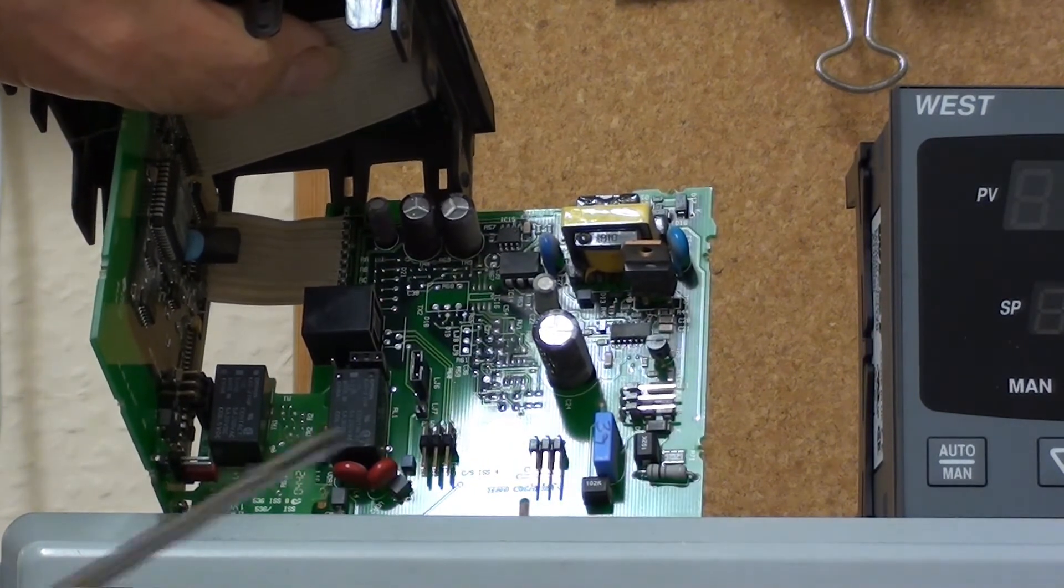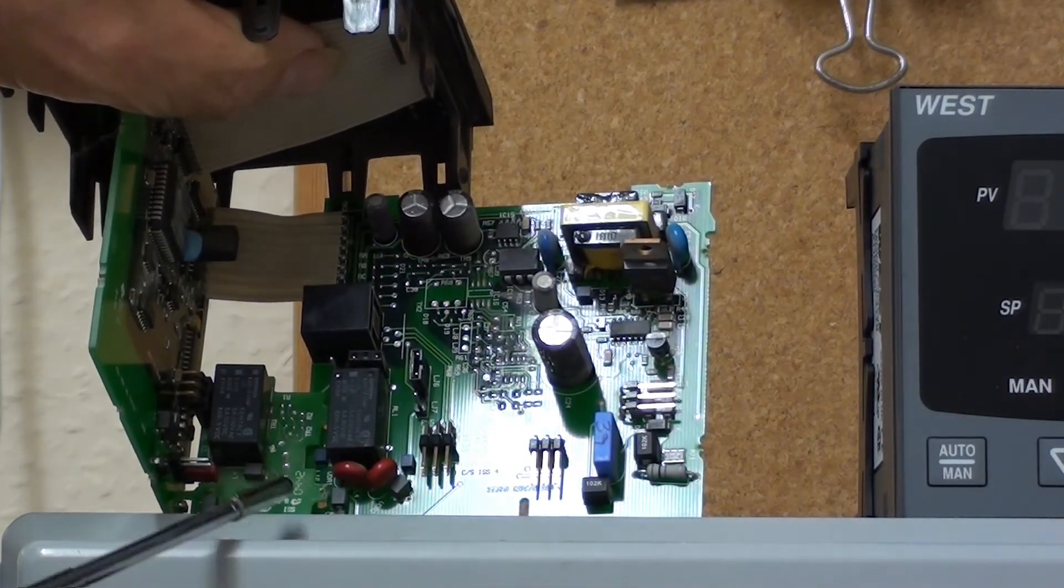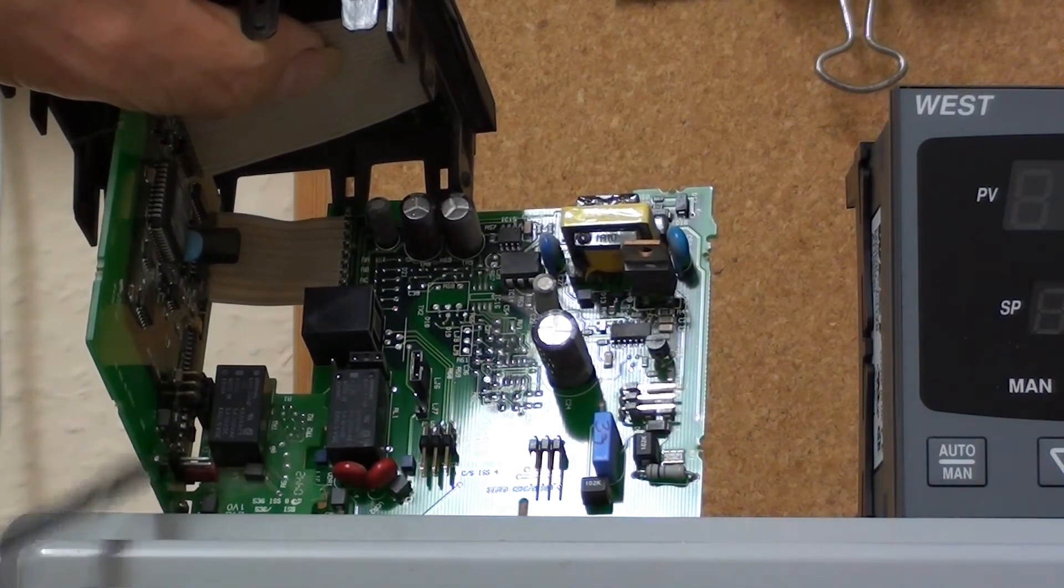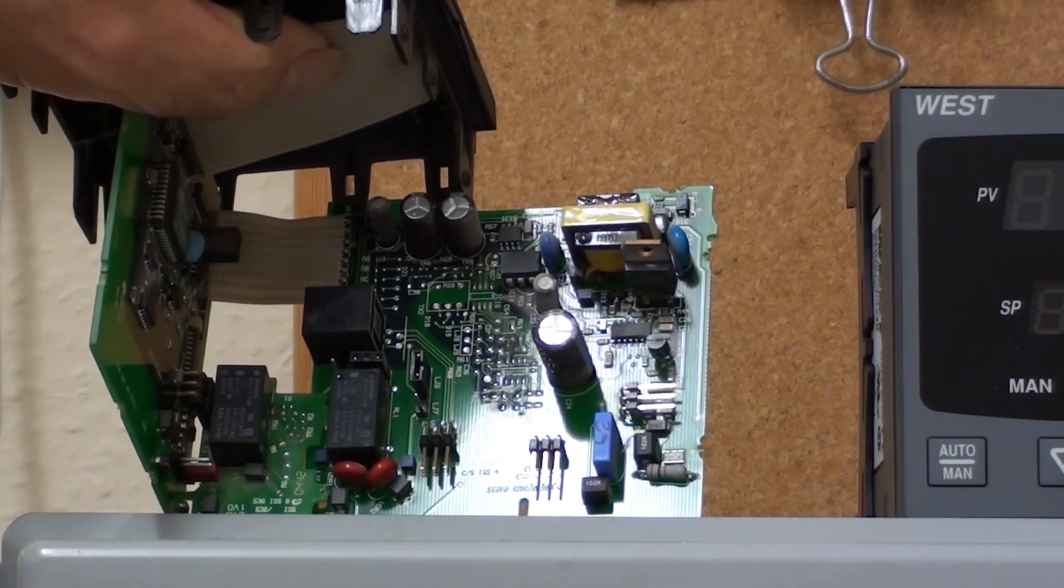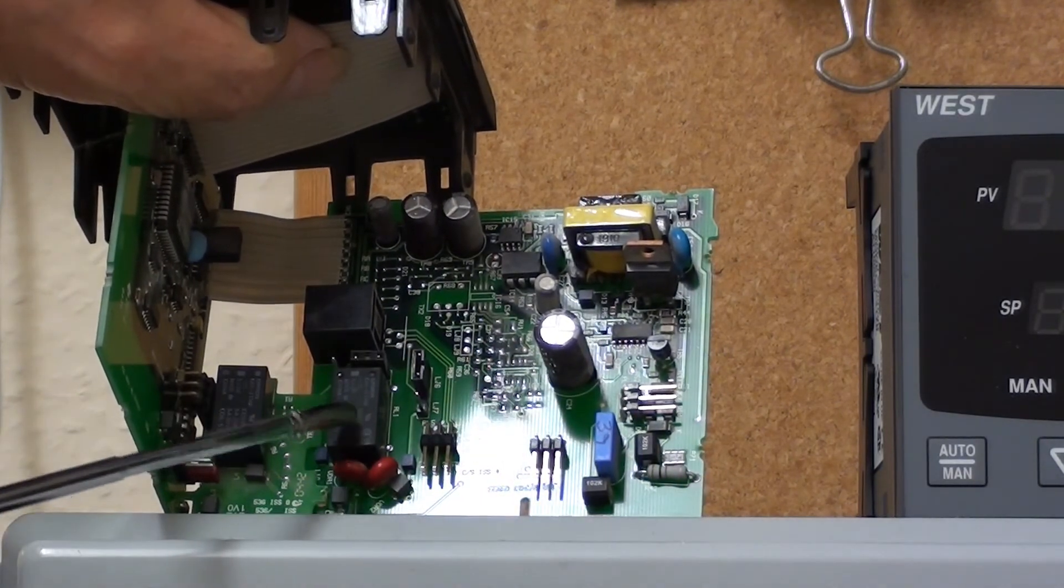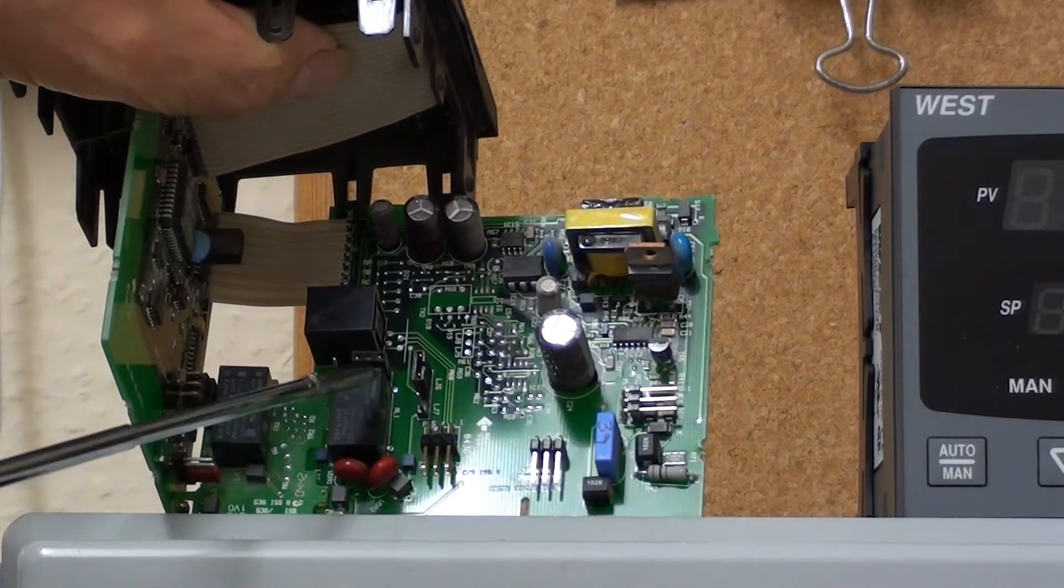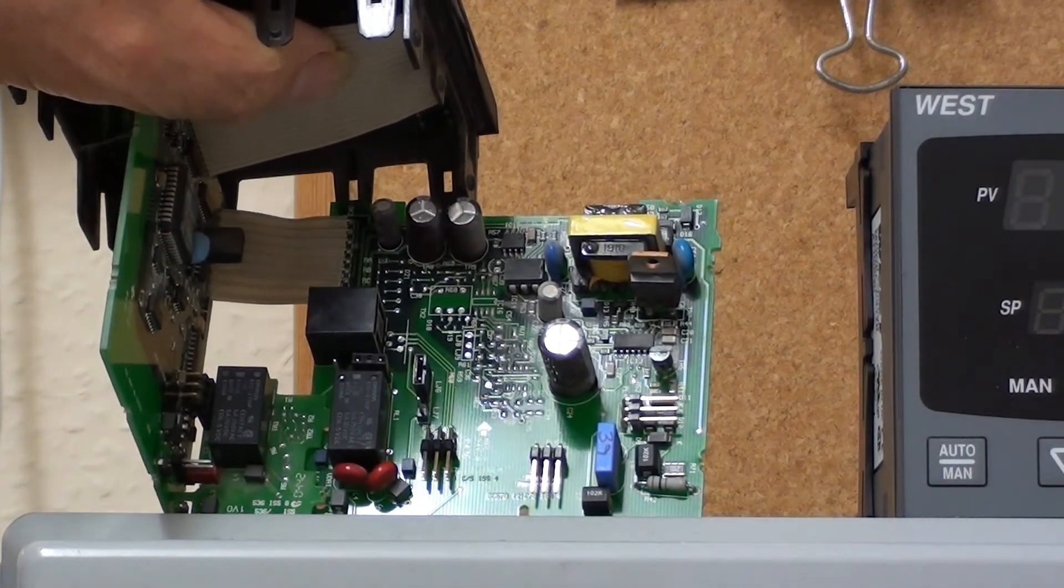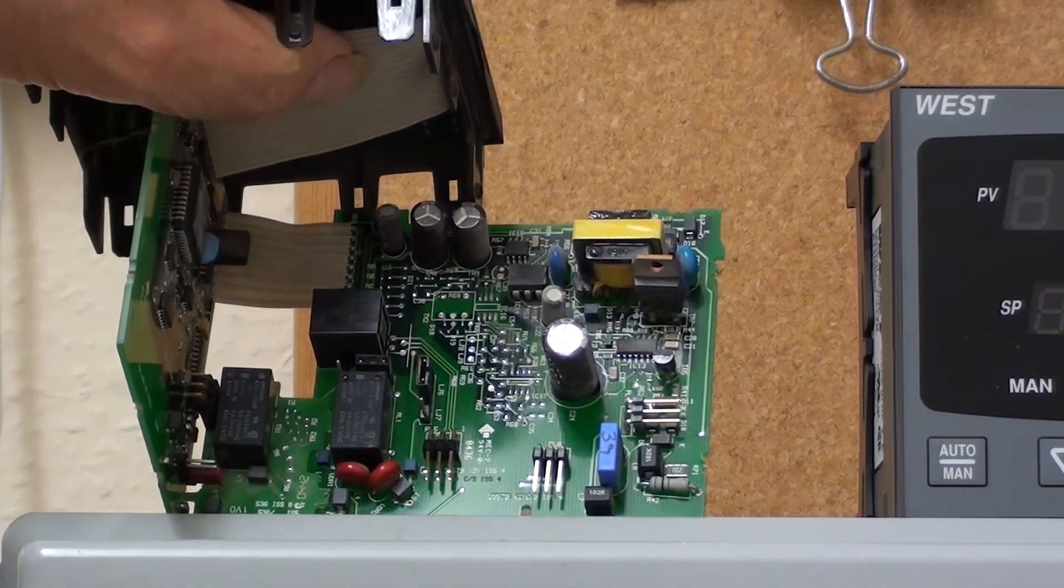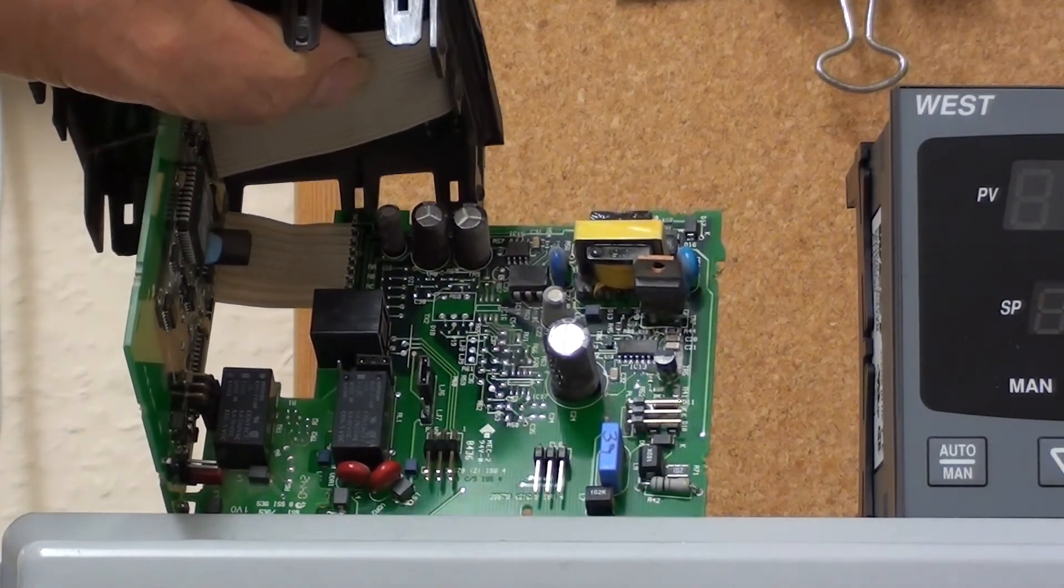And also on this board, the power supply unit board, you can see output 1. The output from this controller is relay output, and the output on output 1, this relay, is factory fitted. It's not a plug-in board. So if the relay fails, you need a new controller.